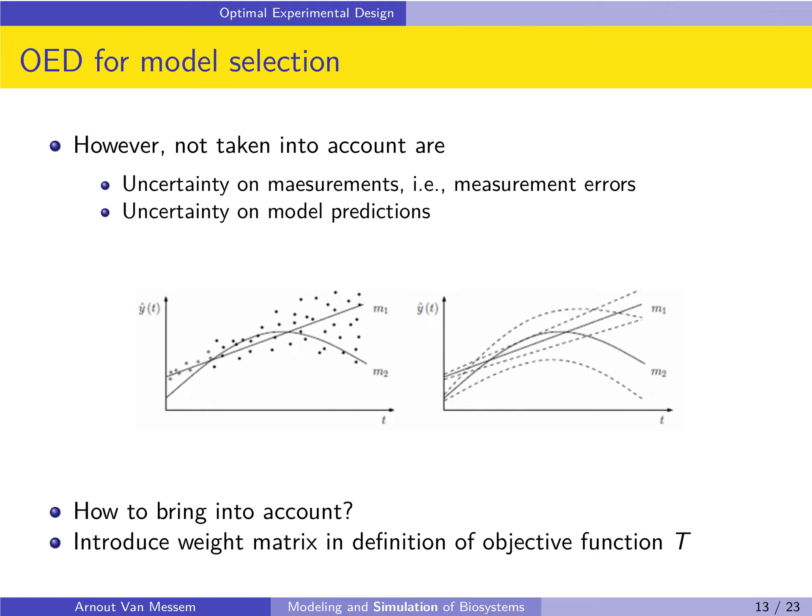However, there are also measurement errors, so uncertainty on the measurements and uncertainty on the model predictions that we need to take into account. This uncertainty is normally indicated by a confidence band around the model, and so we have to take this confidence band, this uncertainty, into account when designing our optimal experimental design. The way to do this is to modify the objective function T, and we will introduce a weight matrix in the definition.